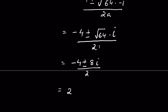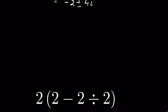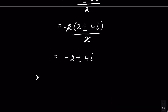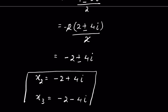Taking 2 common gives minus 4 plus or minus 8i, over 2, and the 2s cancel. So we get minus 2 plus or minus 4i. The two complex solutions are x₂ equals minus 2 plus 4i, and x₃ equals minus 2 minus 4i.